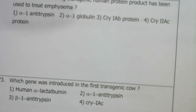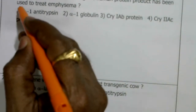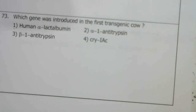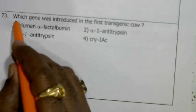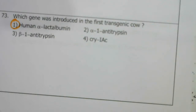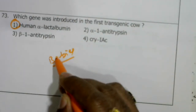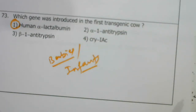Which transgenic human protein product has been used to treat emphysema? Alpha-1 antitrypsin. Which gene was introduced in the first transgenic cow? The gene capable of producing human alpha-lactalbumin — a protein more nutritionally balanced for newborn babies compared to cow's milk.